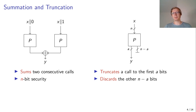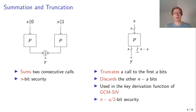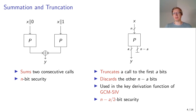We can choose the construction variable based on our A. This construction is also used, for example, in the key derivation function of GCM-SIV. And this construction has N-A over 2-bit security, so the security level depends on how many bits you keep and how many bits you discard.